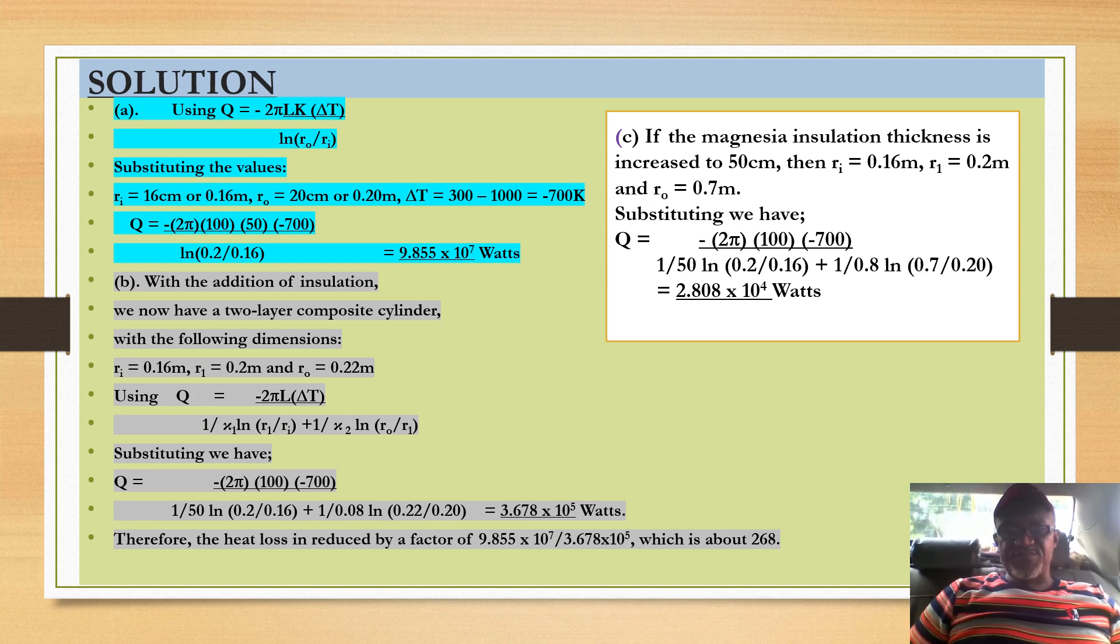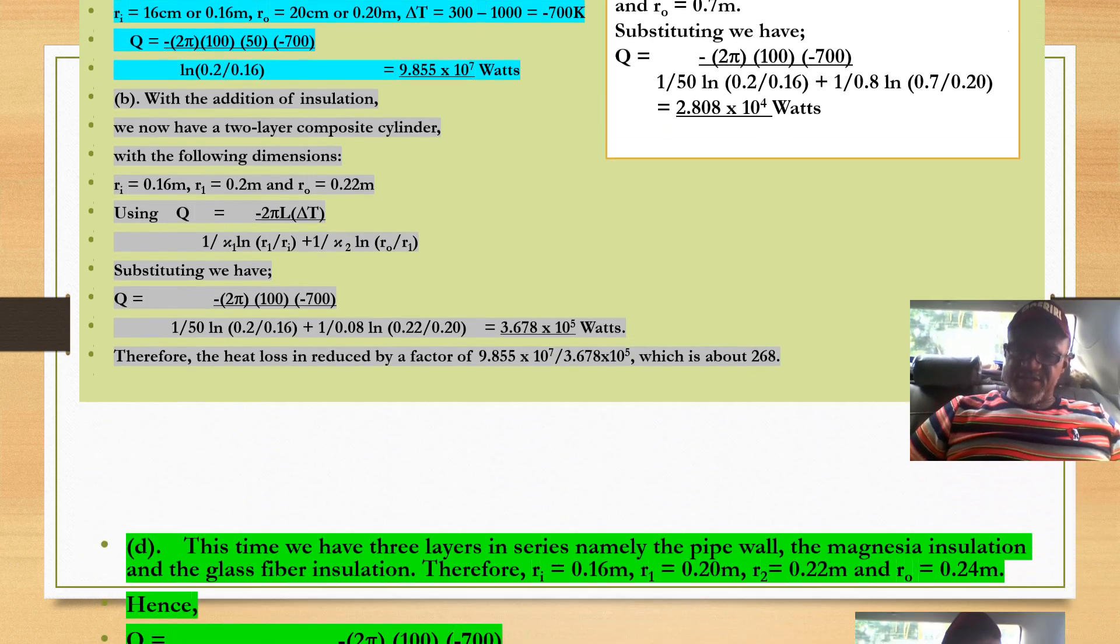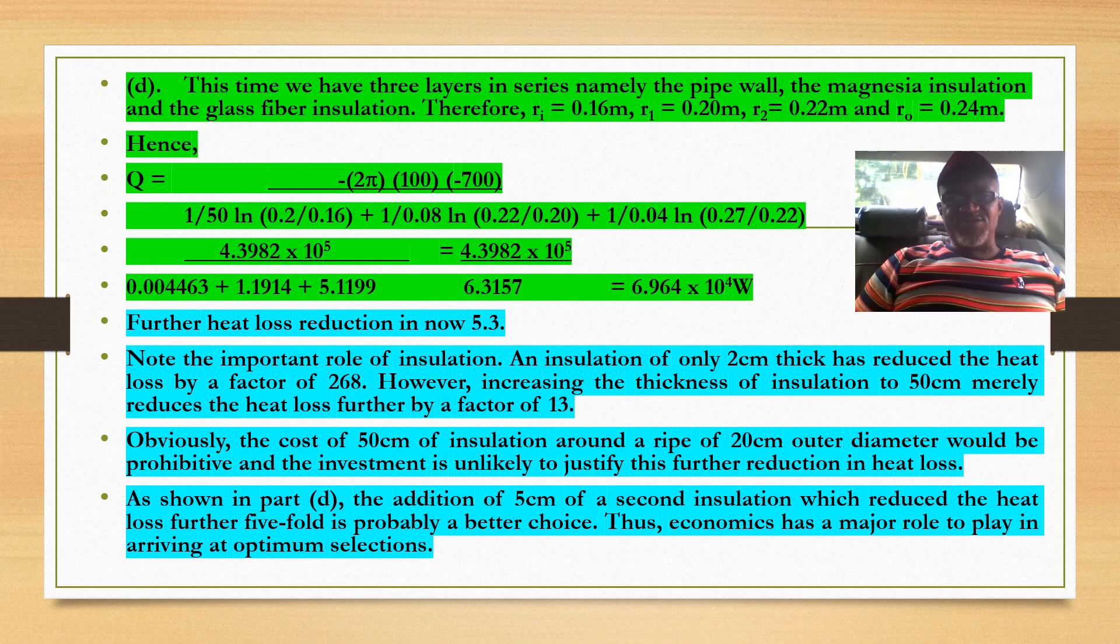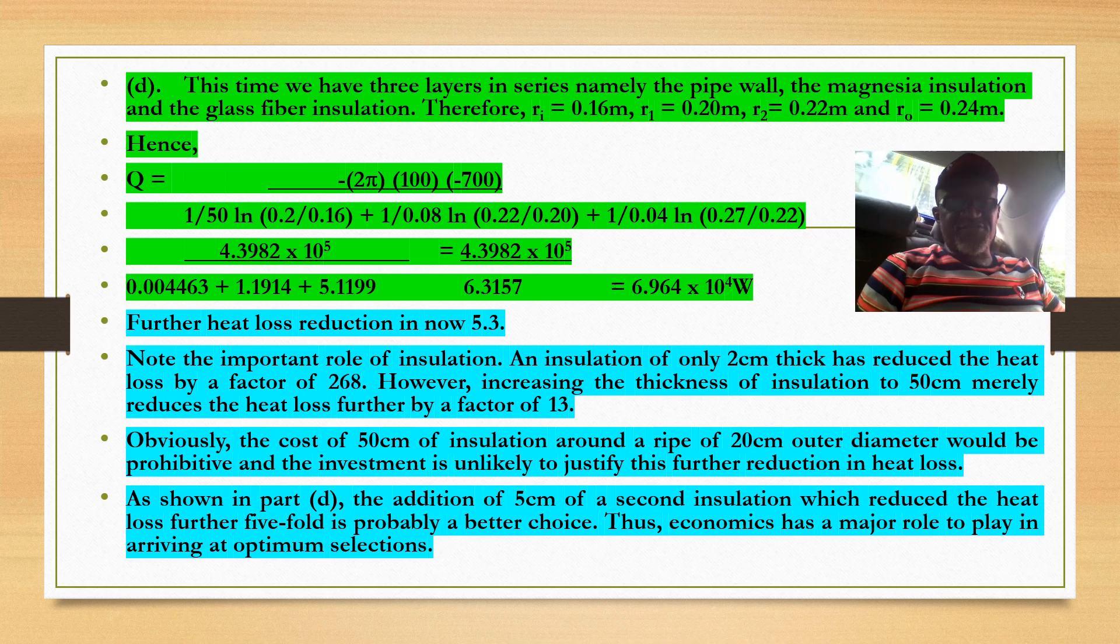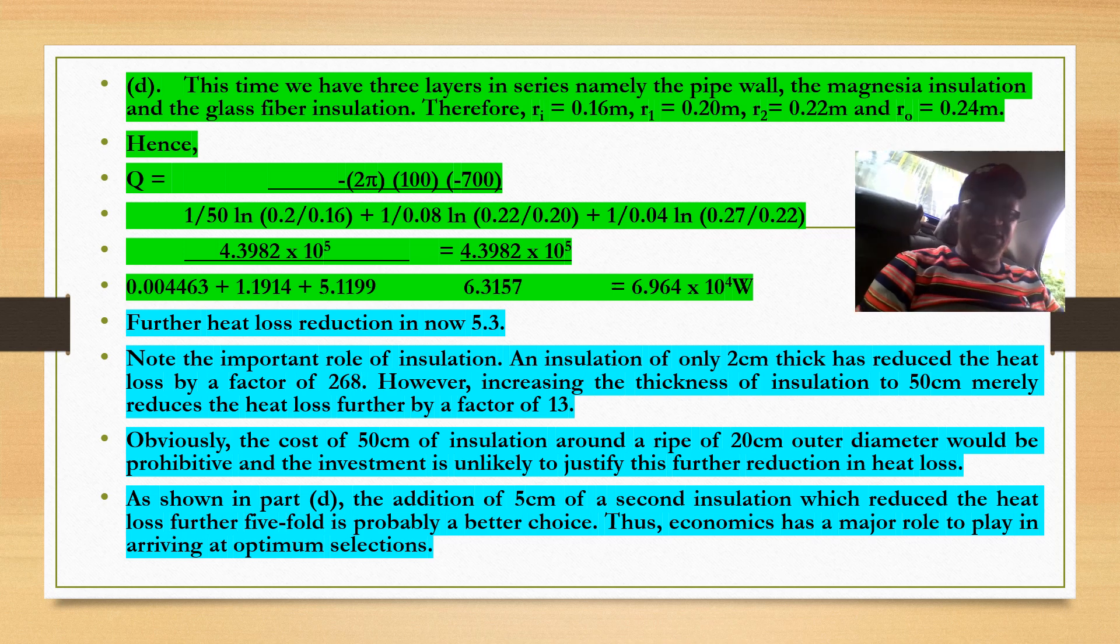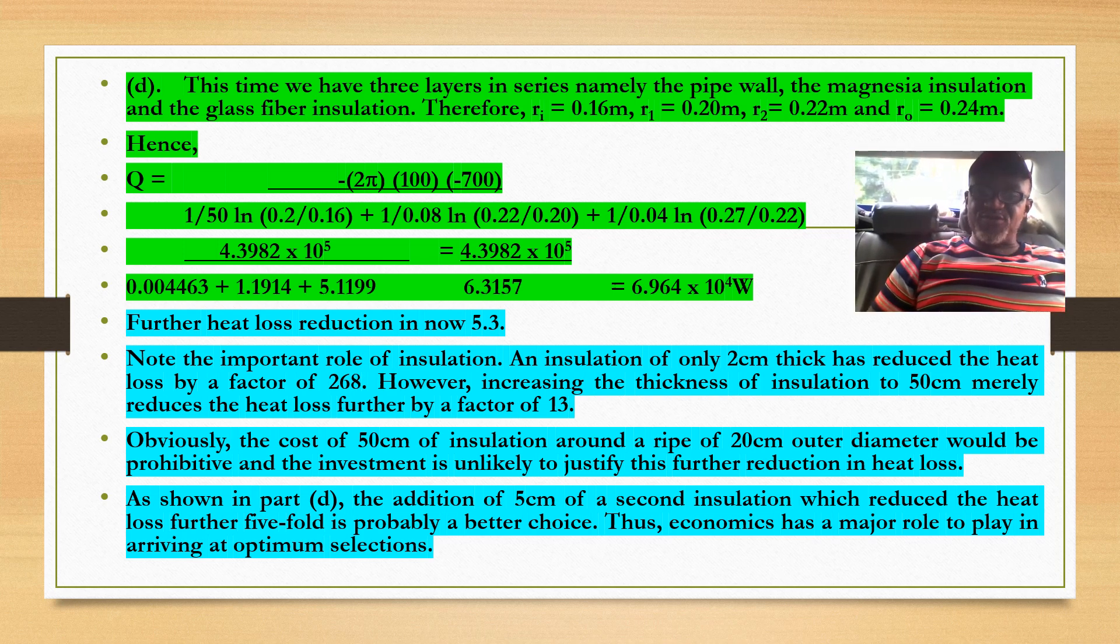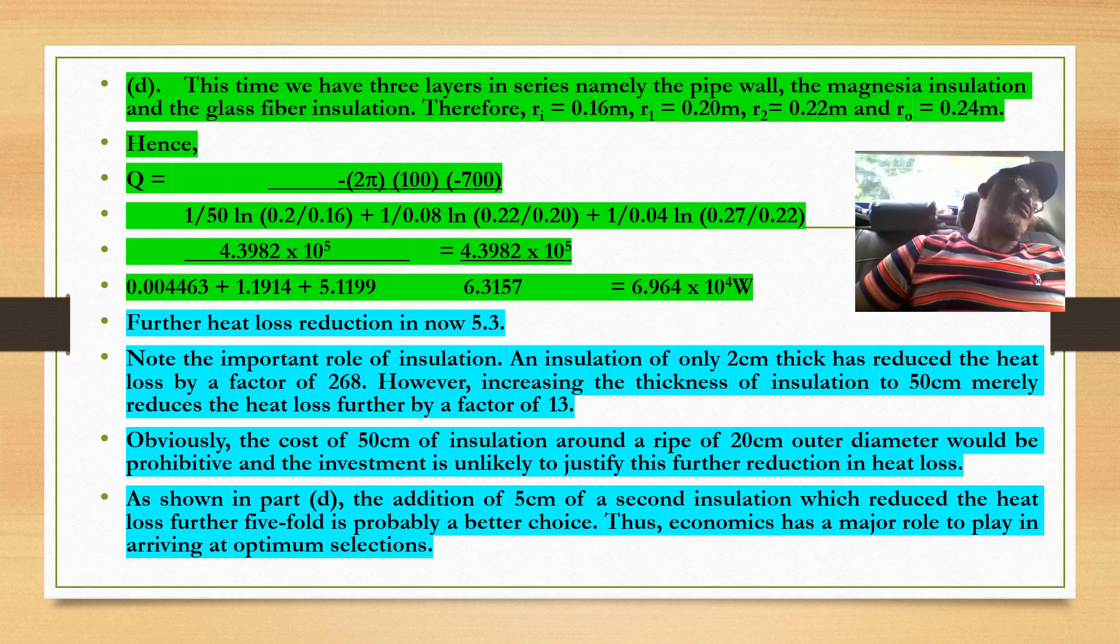When we solve this, you will see that in part (b), heat loss is reduced when we put the first insulation. In part (c), we increase the thickness and observe further heat loss reduction. In part (d), instead of increasing thickness, we add another insulation layer. You see that adding another 2cm insulation is far better. This means 50cm construction would be very exorbitant. It's better to have 2cm coating of a second material than 50cm coating of the first. This is the essence of these calculations - you must calculate before construction, otherwise you waste money assembling materials only to find they don't work as expected.